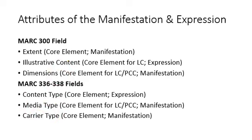Content, Media, and Carrier are new concepts meant to portray data about the physical characteristics in consistent ways that make more sense to computer systems. Generally speaking, you will always see the physical details contained in a MARC 300 field in a library catalog.